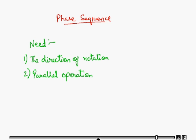We should know the phase sequence so that parallel operation of three-phase alternators and transformers is possible, which is only possible if the phase sequence is known.